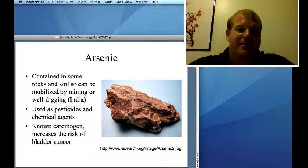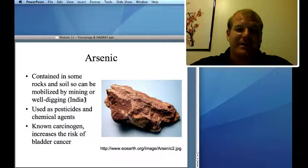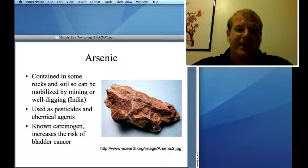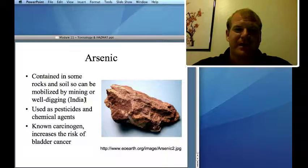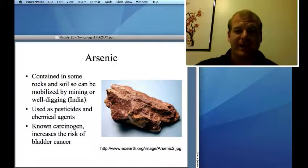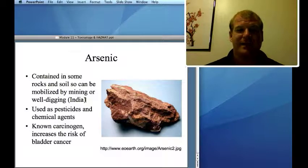Arsenic is found naturally in some rocks, and mining can release it — this is especially a problem in India. Arsenic can also be used in pesticides and chemical agents, such as lewisite, the chemical weapon employed by the British. It's found in persistent pesticides and is a carcinogen that causes bladder cancer.